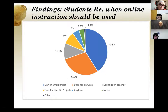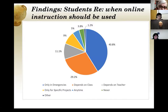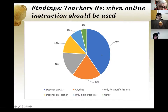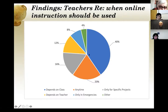When we asked when online instruction should be used, 40.8% of students thought it should only be used in emergencies, and 29.2% thought it depended on the class. Among teachers, 40% said it depended on the class, 20% said anytime, 16% said it depended on the project, and 12% said it depended on the teacher. So it's quite different what teachers thought versus students, with teachers always being more positive.